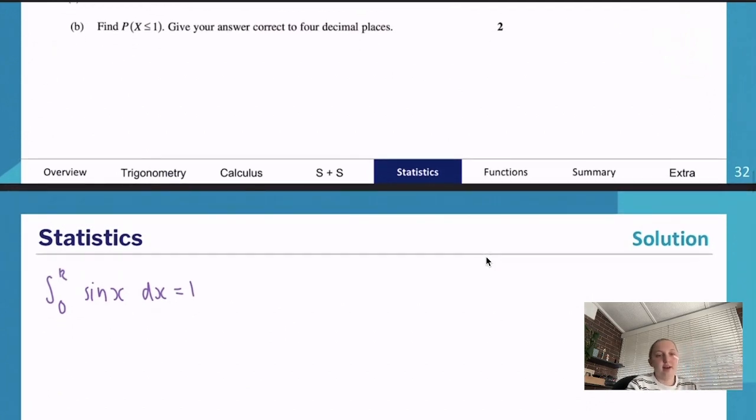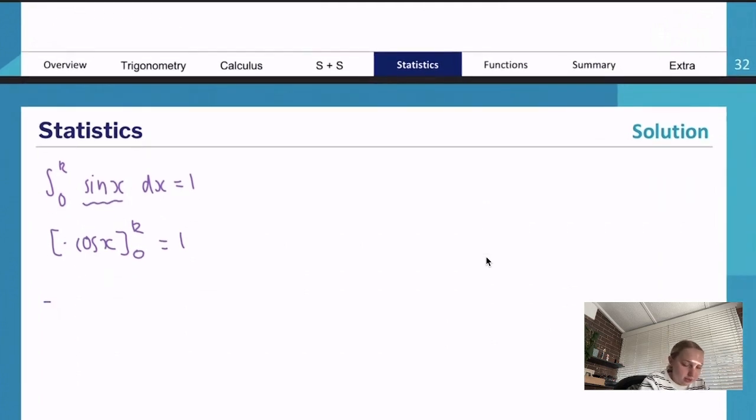Our integration is pretty simple. The integration of sine x is negative cos x between k and zero equals one. Then we do how we would for any other integration. Cos zero, the reason this is plus is because we've got a negative here, and then we're minusing the second term. That's why we change that to a plus equals one. So negative cos x equals zero because this is equal to one, and then we're going to minus that one across.